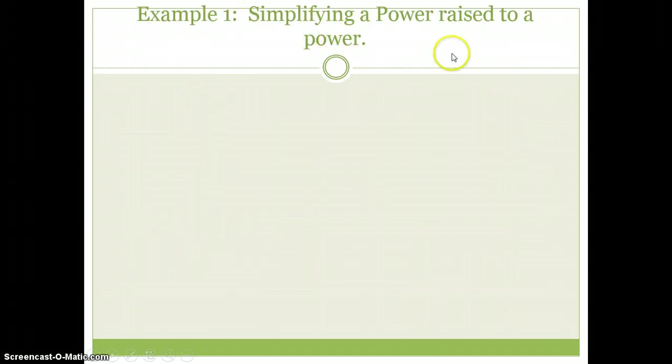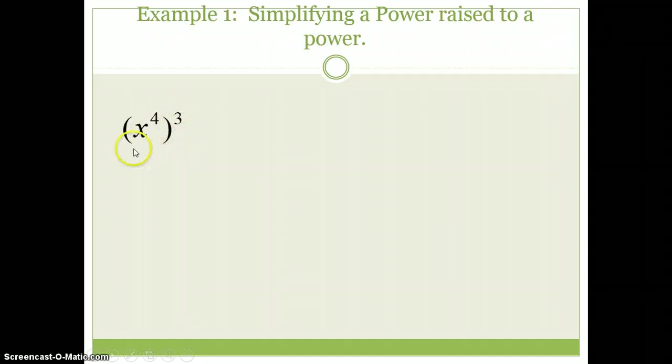Here's example one. It's about as easy as it gets, simplifying a power raised to a power. We're going to start with x to the fourth to the third power. We have the one big base, two exponents right next to each other. The power to a power rule says multiply these two, and this is a one-stepper. We are done. X to the 12th. 4 times 3 is 12.